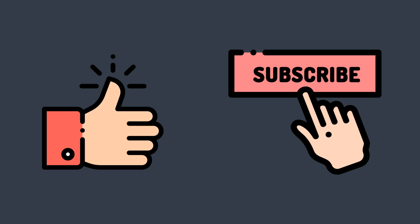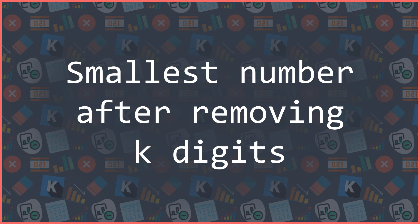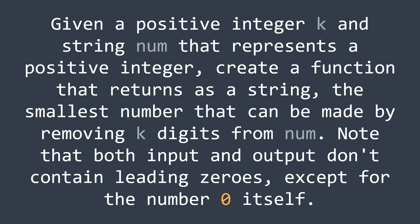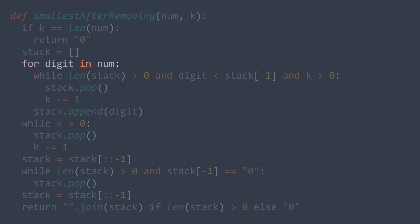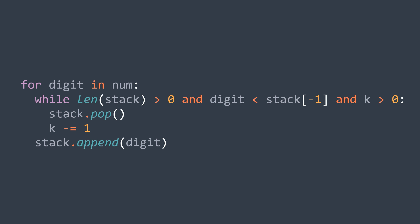The second example is the solution to the 'smallest number after removing k digits' problem. The problem says we have an integer num represented by a string and an integer k, and we have to return the smallest possible number by removing k digits from num. For example, if num is 26,378,491 and k is 3, the smallest number by removing three digits is 23,491. The idea to solve this is to use a stack: for each digit in num, we keep popping from the stack while the stack has elements, our digit is smaller than the stack's top, and k is greater than 0. Then we push our digit onto the stack. I want to focus on this part of the code where we have nested loops.